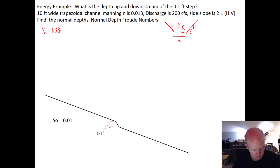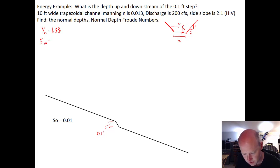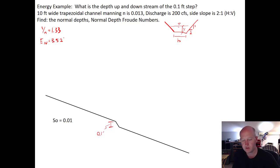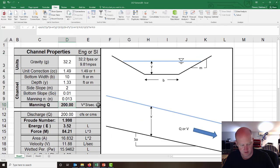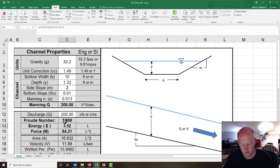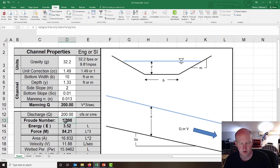The specific energy at normal depth is 3.52 feet, and the Froude number is greater than 1, which means this is supercritical flow. That tells us upstream controls the problem, so we're going to start upstream and work our way downstream.